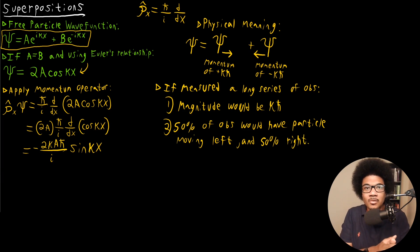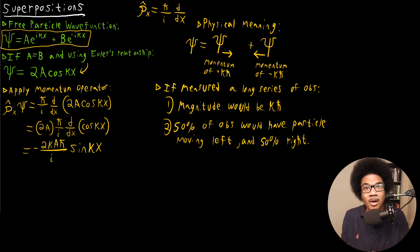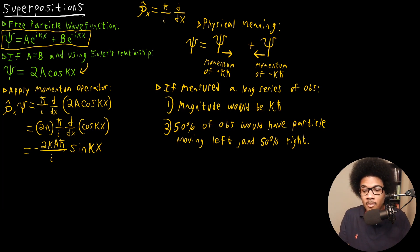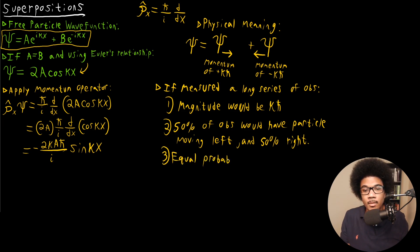If there were some other consideration to take into account — for example, a very attractive Coulombic potential on the left side — the particle might be biased towards the left, and more observations would show it moving in that direction. But since there's nothing biasing this problem and it's just a free particle, it should just be a coin flip. We can't predict the direction, only that there is an equal probability of the particle moving to either side.